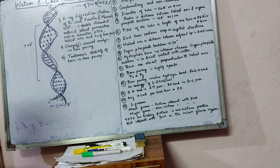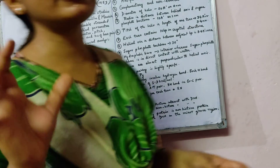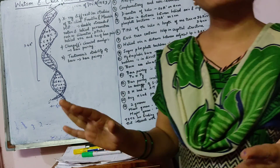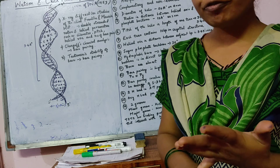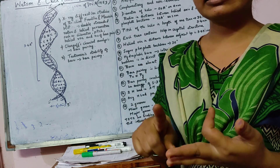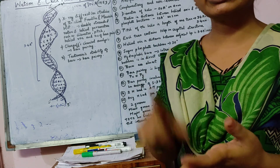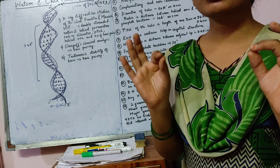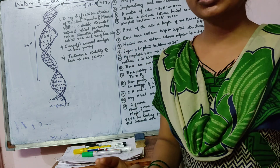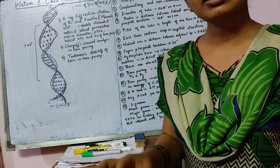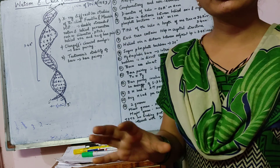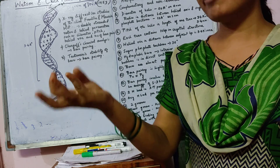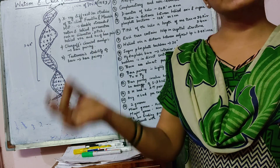There are deviations from the Watson and Crick model, which include the distinction between different forms of DNA: A form, B form, C form, and Z form. The Watson and Crick model refers to the B form of DNA, and the deviations include the A, C, and Z forms. Notes on the differences between these forms have already been provided.